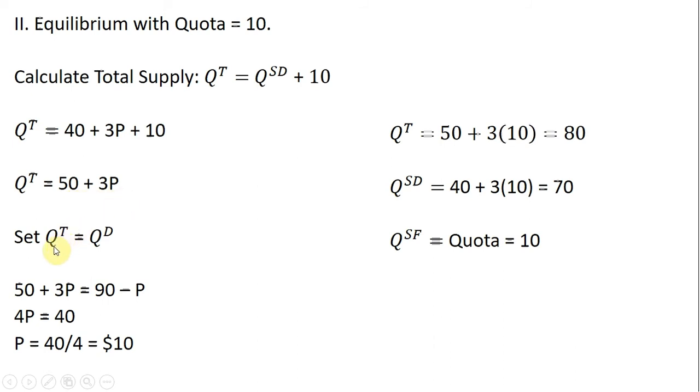Setting the total quantity supplied equal to the quantity demanded. We're going to get 4P equals 40. And we'll see that the domestic price will rise in the face of a quota. Okay, so this supply restriction shouldn't be a surprise.